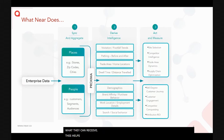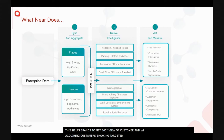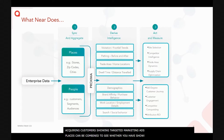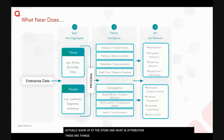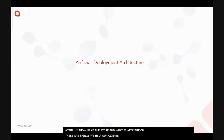This helps brands get a 360-degree view of their customers, and supports engagement in terms of acquiring new customers and showing targeted marketing ads. We also combine people and places data to measure attribution — for example, whether showing an ad actually caused people to show up at a store.